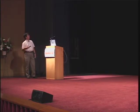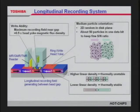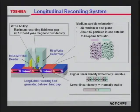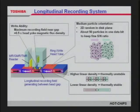In longitudinal recording, the magnetization direction is in-plane, and the magnetic field is generated between the small gap of the magnetic yoke. Much of the generated magnetic flux is lost as stray field rather than going through the disk, so only about half of the generated magnetic flux density is used. As magnetic bit sizes become smaller, the magnetic particles become thermally unstable, creating a limit on how small a magnetic bit can be made with longitudinal recording while maintaining thermal stability.